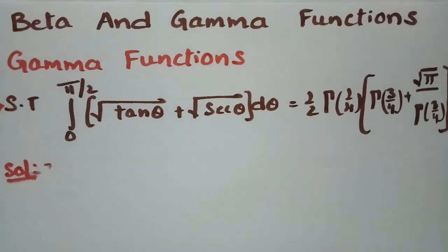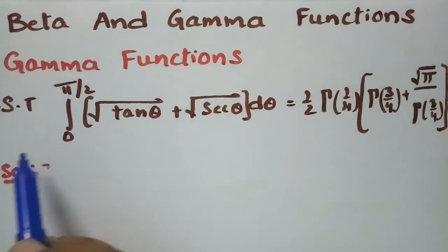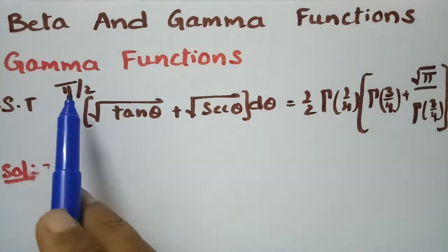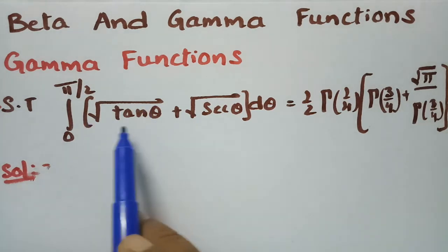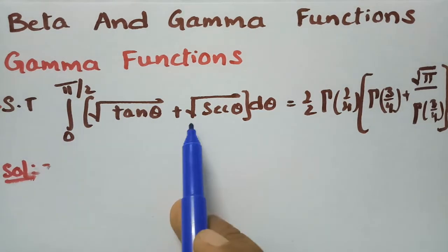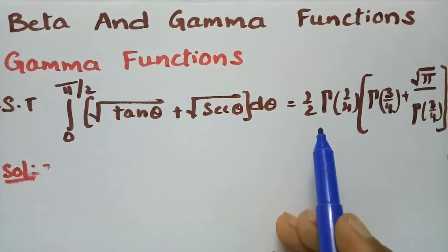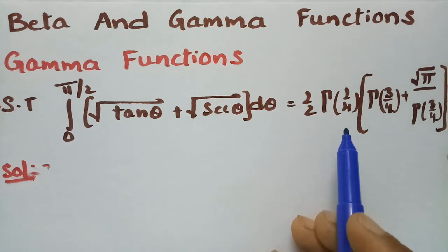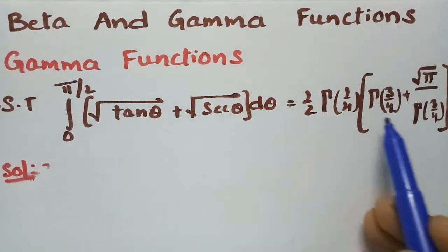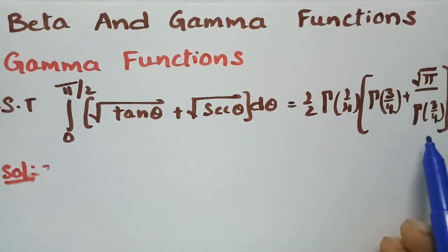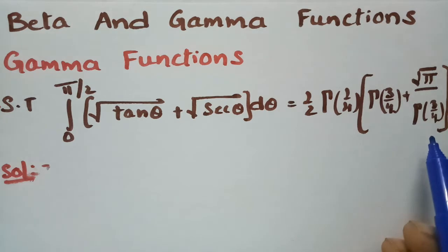This is the most important problem from beta and gamma functions using beta and gamma properties. We are going to solve this. We have to show that the integral from 0 to π/2 of (√tan θ + √sec θ) dθ is equal to half times Γ(1/4)·Γ(3/4) plus √π divided by Γ(3/4).